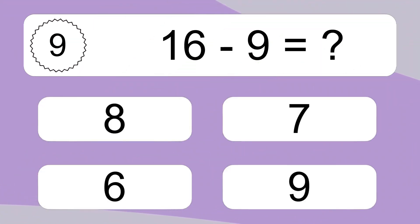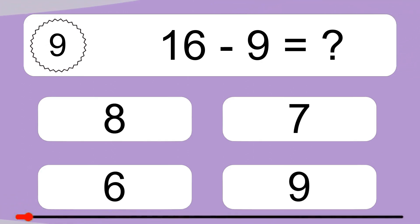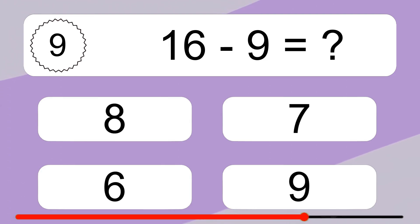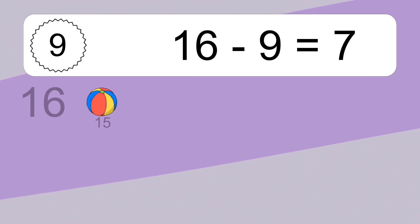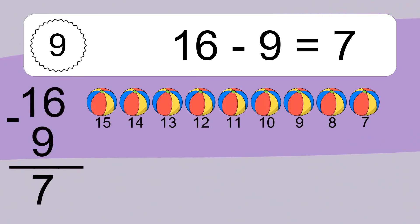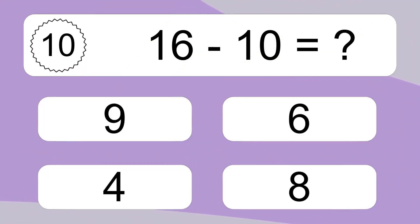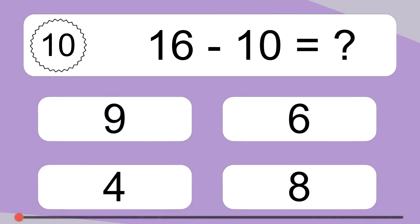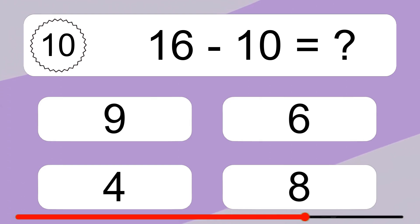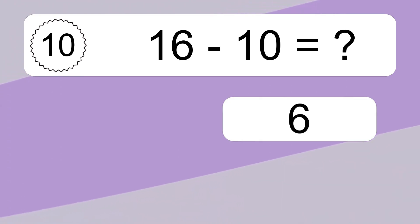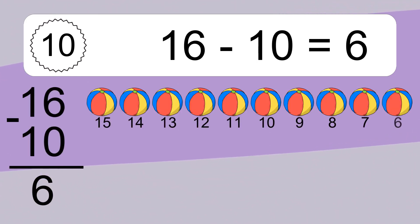16 minus 9 equals what? 16 minus 9 equals 7. Let's count it: 15, 14, 13, 12, 11, 10, 9, 8, 7.